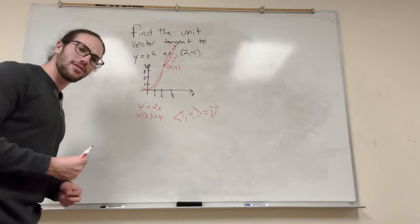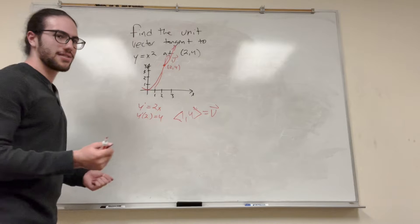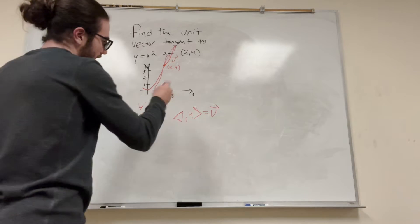So how do we convert this to a unit vector? Well, we find the magnitude, and then we divide the vector by the magnitude.